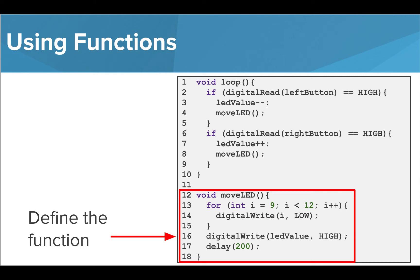This function is turning off any LEDs that were previously lit and lighting the one we want based on the LED value variable, which changes its value based on which button is pressed.